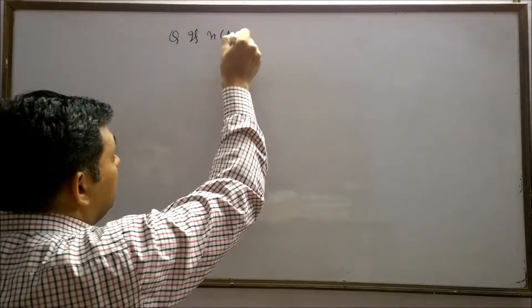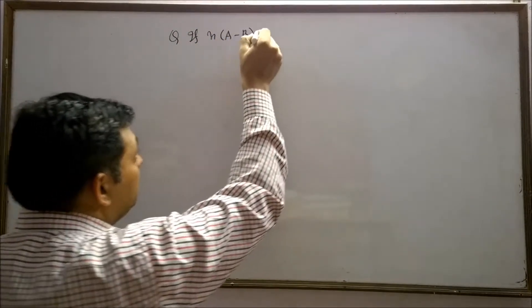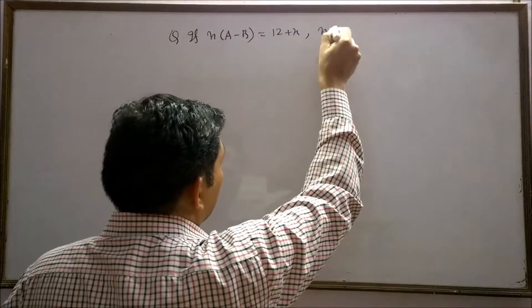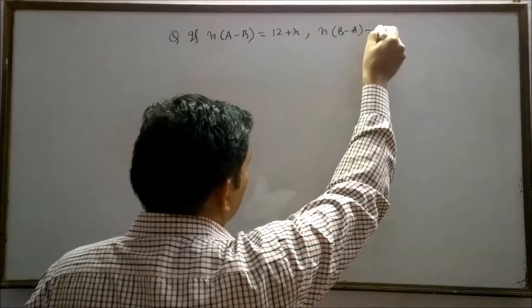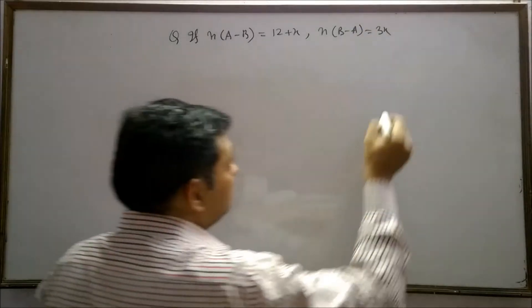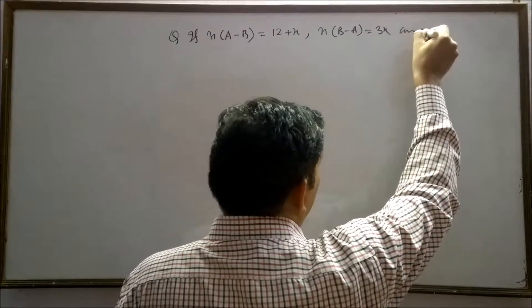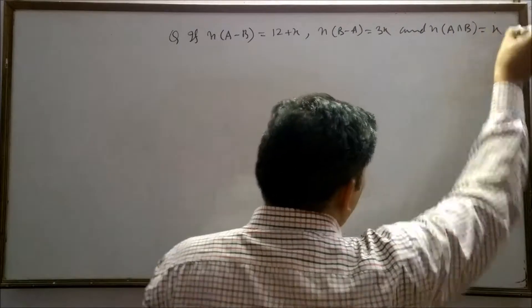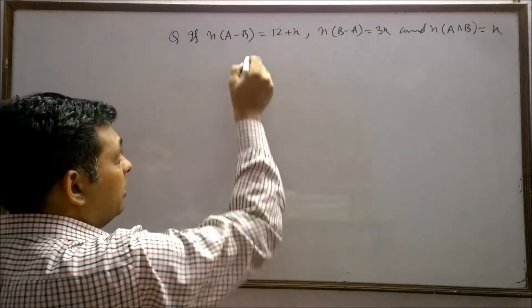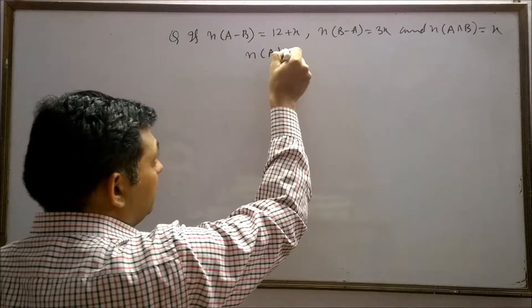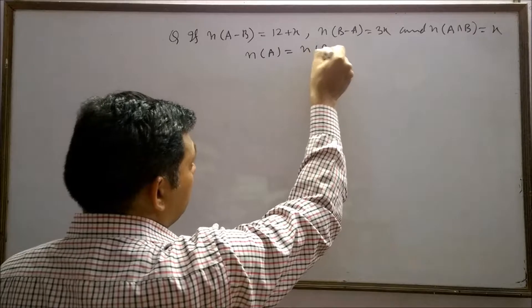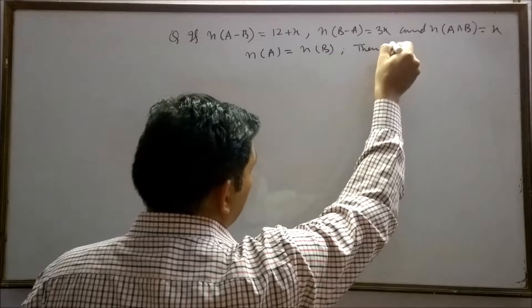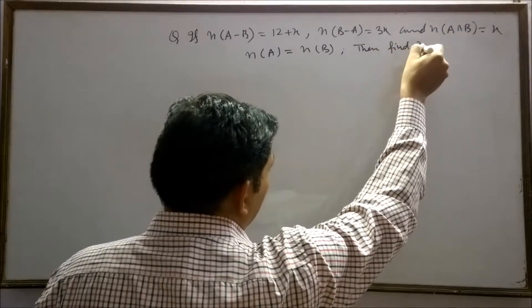If n(A-B) is equals to 12 plus x, n(B-A) is given to 3x and n(A∩B) is equals to x. And it is also given that n(A) is equals to n(B). Then find x.